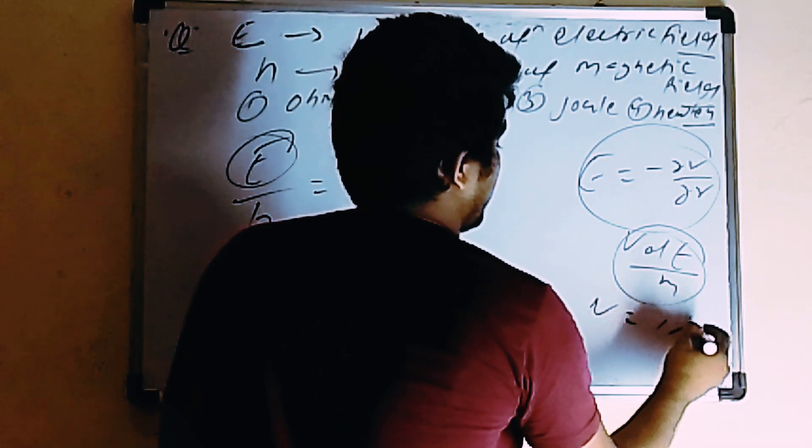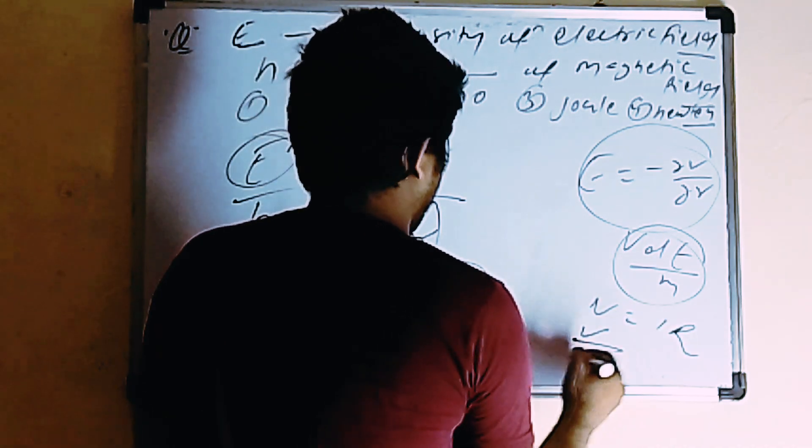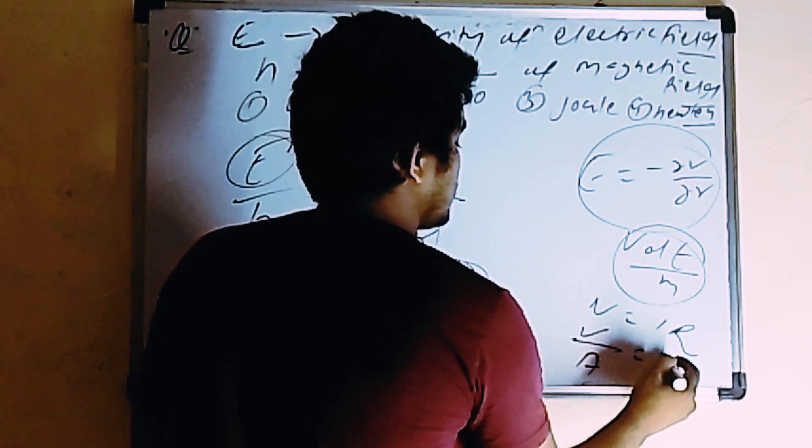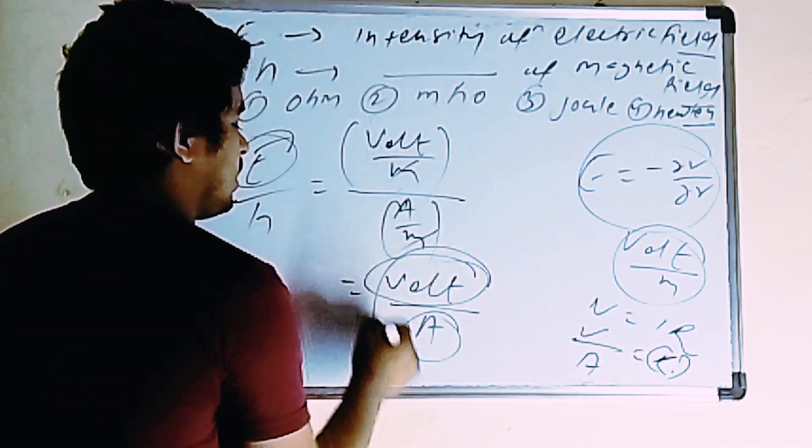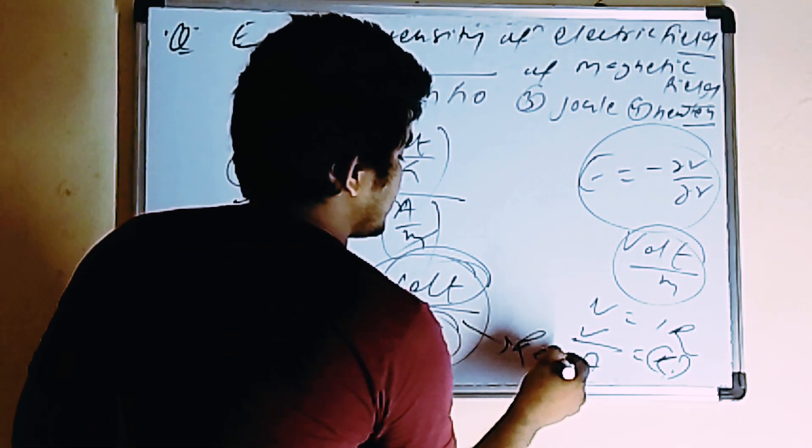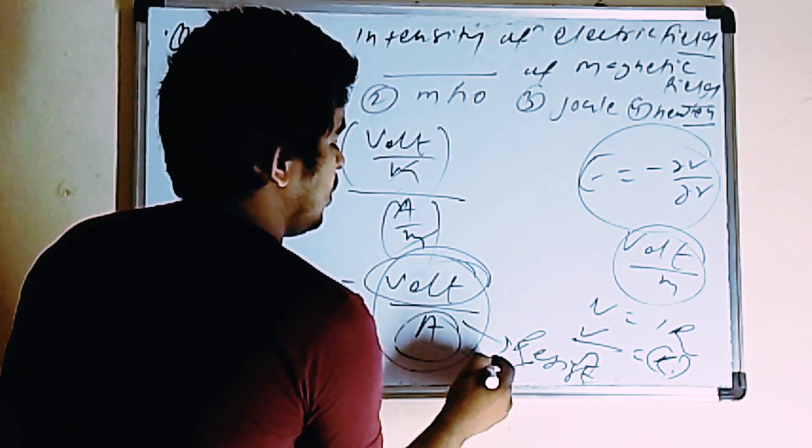V equals to what? I R. So what is here? V volt divided by I current equals to R. So what is the dimension? This is the dimension of what? Resistance. And what is the dimension of resistance? Ohm. Agree?